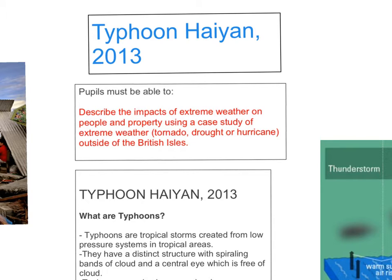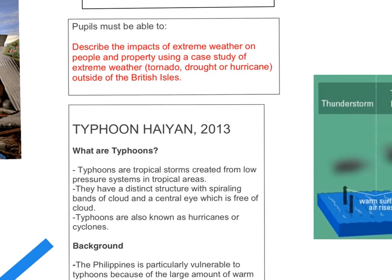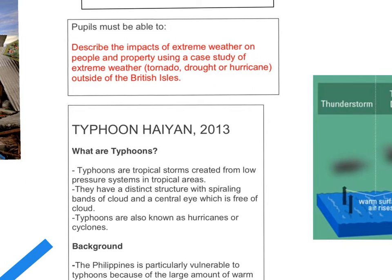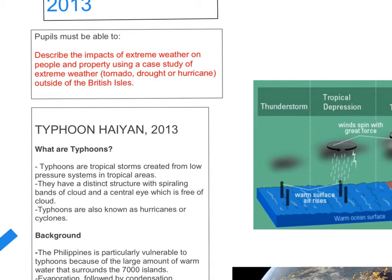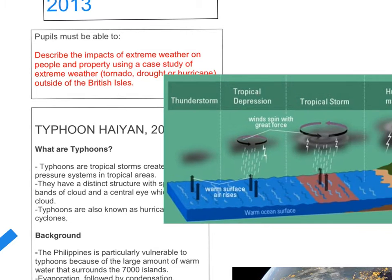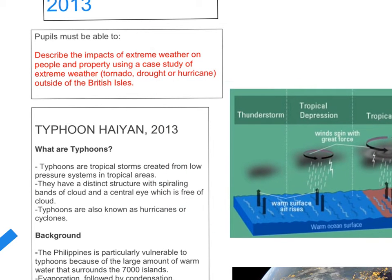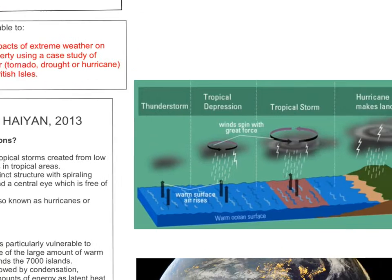As before, you can use this video alongside your e-book to hopefully best learn the case study and develop high quality case study answers, particularly long answers. We're going to start by looking at what is a typhoon. Typhoons are tropical storms created from low pressure systems in tropical areas, with a distinct structure of spiralling bands of clouds and a central eye which is free of cloud. They can also be known as hurricanes or cyclones depending on where you are in the world.